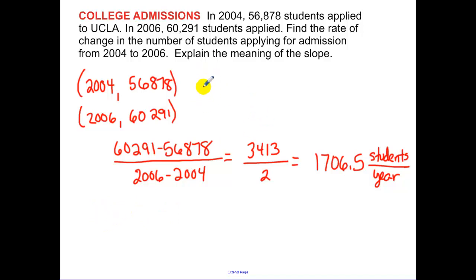And this is 1706.5 students per year. Now something that I'm going to want you guys to do is I want you to explain the meaning of the slope. So every year, the value of our slope or the value of our rate of change, 1,706.5 more students applied to UCLA.